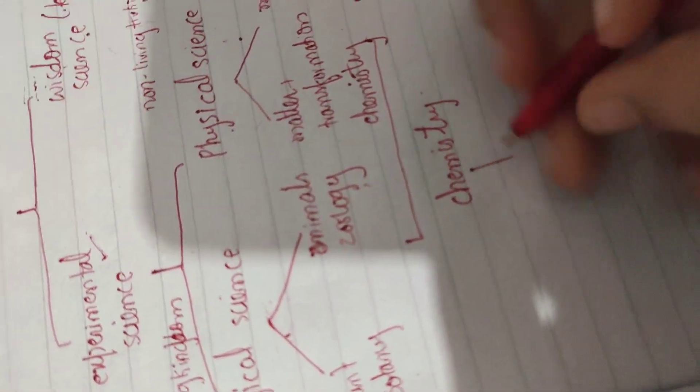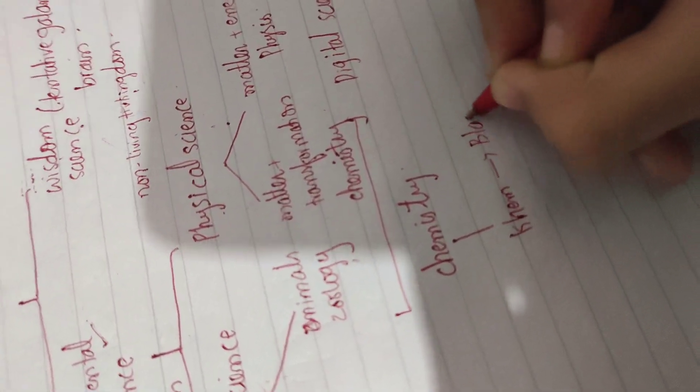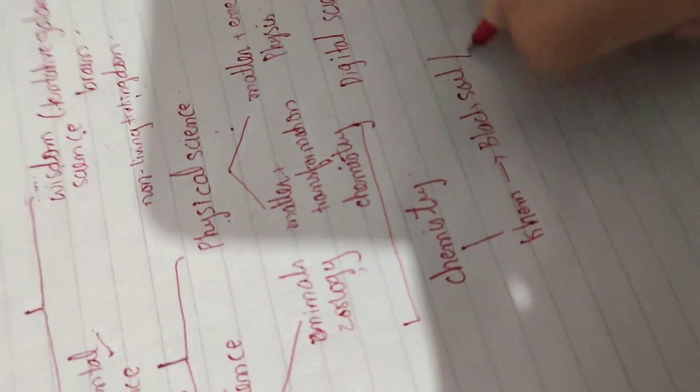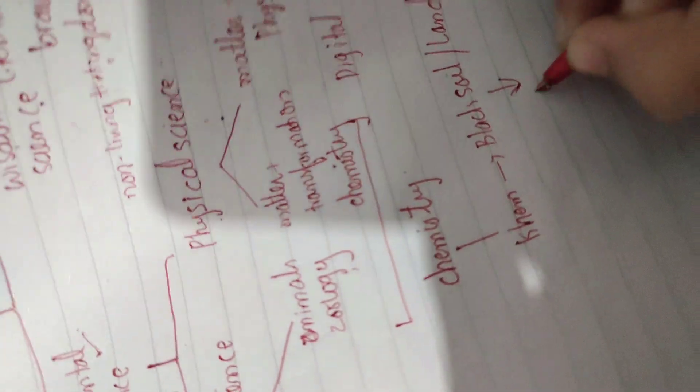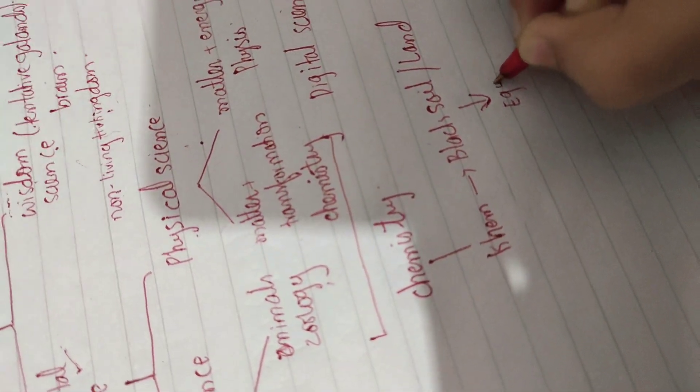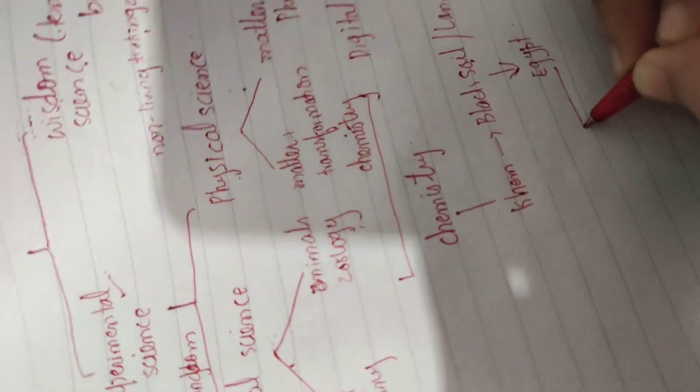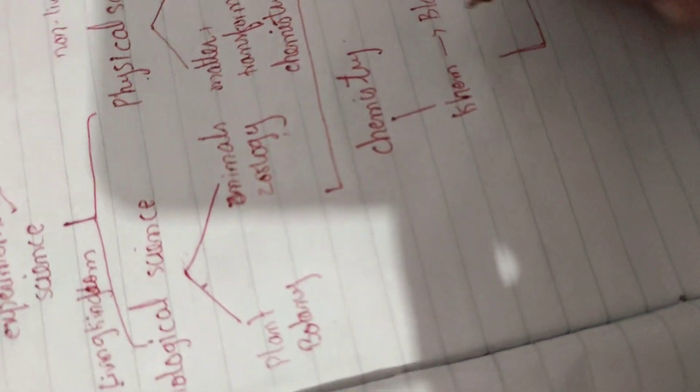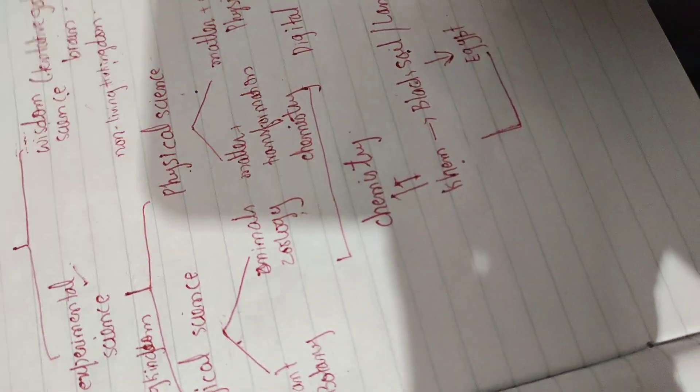Now this chemistry word is derived from chem. Chem is basically black soil or you can say land that is derived from Egypt. Because the land of Egypt is black and the Egyptians used chem because Egypt was known as chem. So this chem comes from chemistry. This chem comes from chem that is known as soil and land.